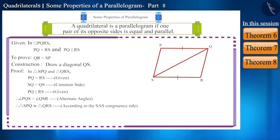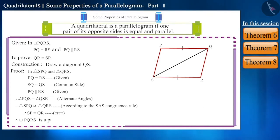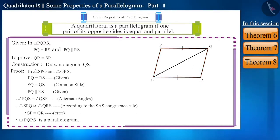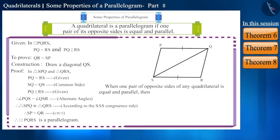The corresponding sides of congruent triangles are equal. Therefore, side SP is equal to side QR. Therefore, quadrilateral PQRS is a parallelogram — that is, if a pair of opposite sides of any quadrilateral is equal and parallel, then that quadrilateral is a parallelogram.